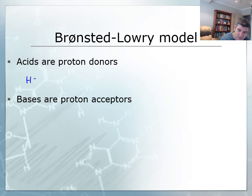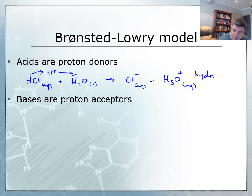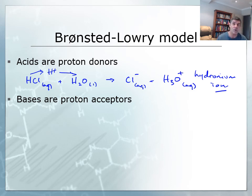The simplest way to demonstrate the Bronsted-Lowry model is to put a molecule of hydrogen chloride into water. What we notice is the H+ ion is donated from the molecular species and goes to the water molecule. That leaves a Cl⁻ remaining in solution and forms an H₃O⁺ ion — known as the hydronium ion. This is the one we are measuring when we look at things like pH, and we'll look at that in more detail later. The hydronium ion indicates we have an acidic solution and that the acid has donated a proton, an H+ ion, to the water molecule.